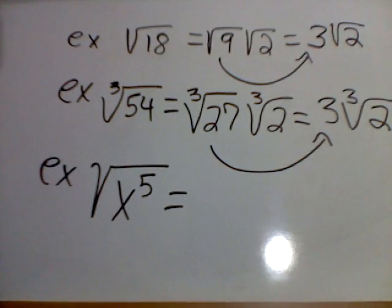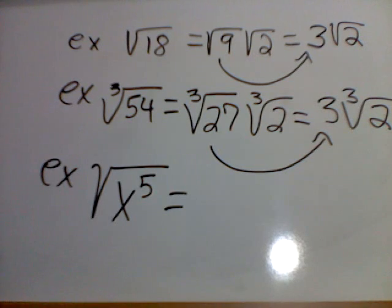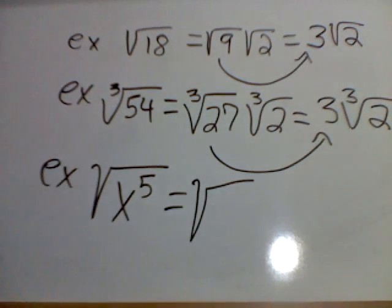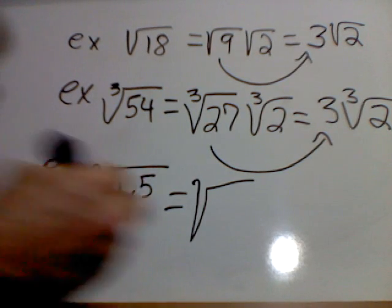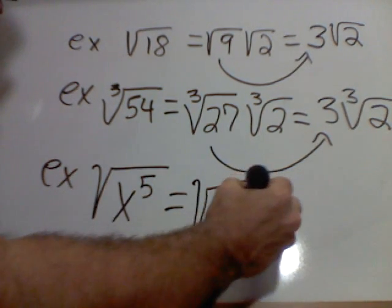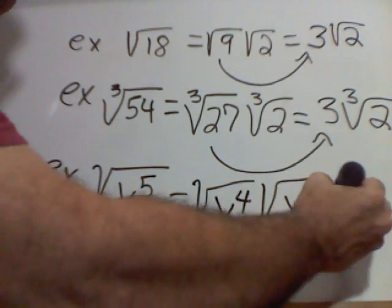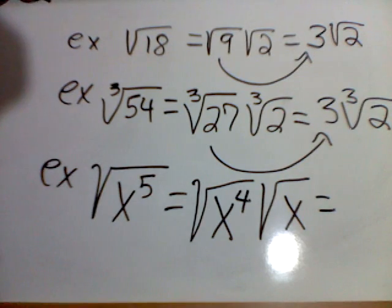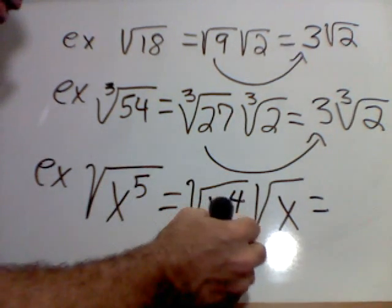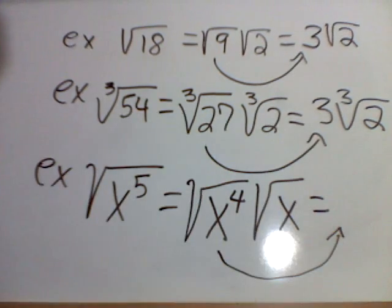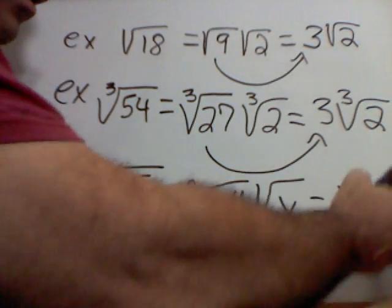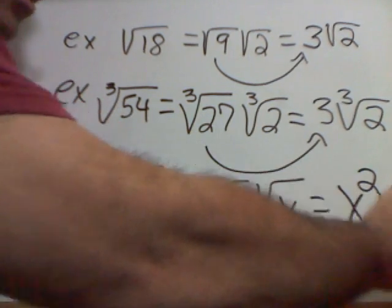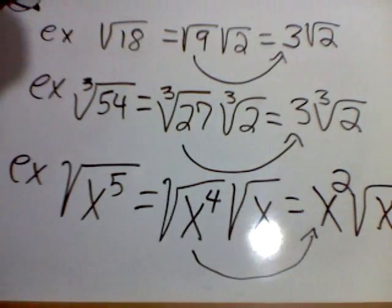Variables also. Square root of x to the 5th. The largest factor of x to the 5th that is a perfect square is x to the 4. So I can write this as x to the 4 times x. But the square root of x to the 4 is x squared, and then I still have my square root of x.